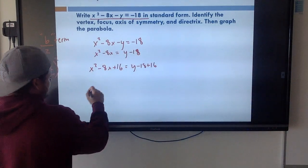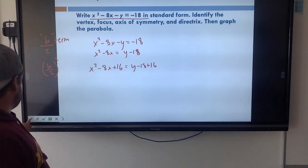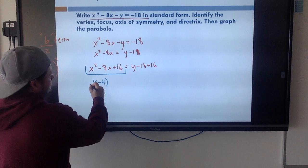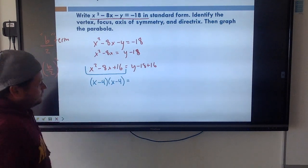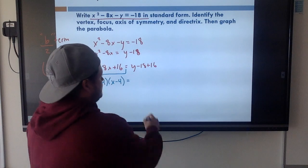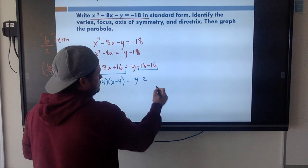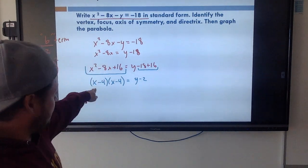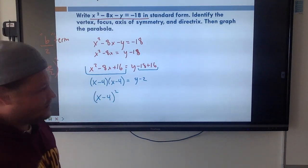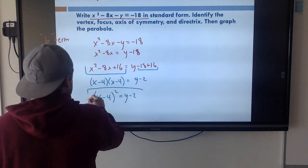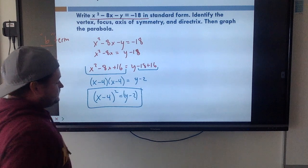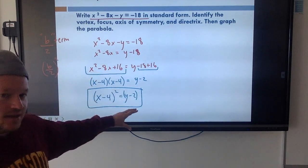Now I'm just going to simplify. The whole reason we're completing the square is that I can now factor x squared minus 8x plus 16 to just (x minus 4)(x minus 4). If you were to multiply those back together, you'd get the original. Simplify the right side: y minus 18 plus 16 - these are like terms, so it's really y minus 2. And (x minus 4)(x minus 4) is the same as (x minus 4) squared. So we have (x minus 4) squared equals y minus 2. Now we have this in standard parabolic form.